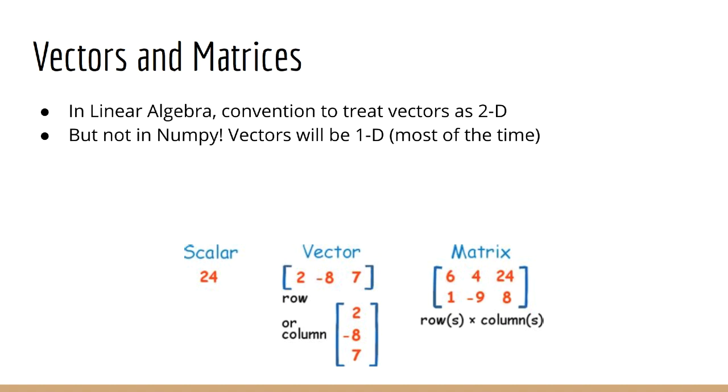Now some of you might have noticed that in different fields of math, there is a convention to treat vectors as two-dimensional. So if you have a d-length vector, you might think of it as a d by one column vector, or a one by d row vector. In NumPy, although you could represent vectors that way, it is unconventional, so normally you would just use a one-dimensional array for vectors.